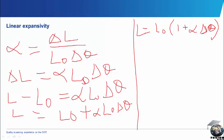This is the equation for final length. Within some textbooks, they write it as L2 equal to L1 bracket 1 plus alpha delta theta.